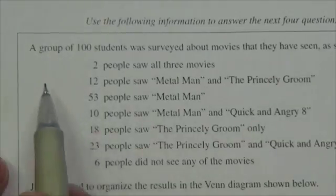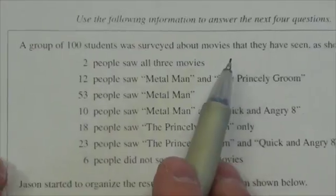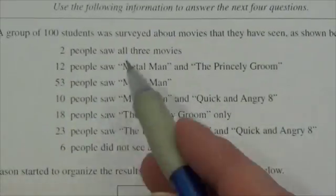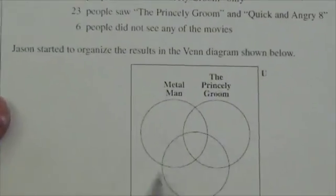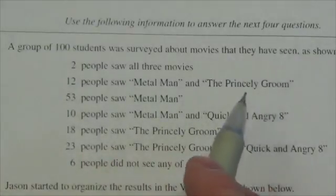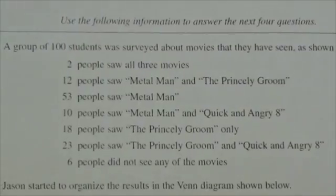Okay, so in this question we read that a group of 100 students were surveyed about the movies they have seen. We've got a bunch of information here, and Jason is going to start to put them into a Venn diagram. We've got the movies: Metal Man, The Princely Groom, and Quick and the Angry 8.